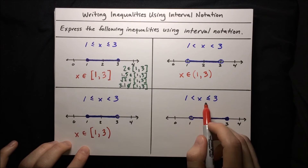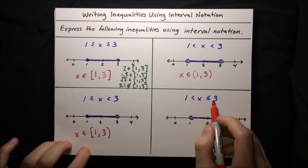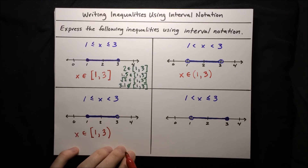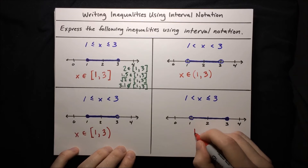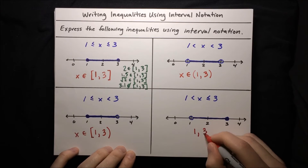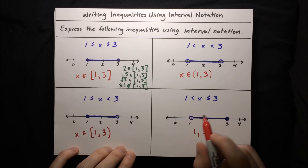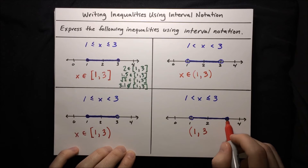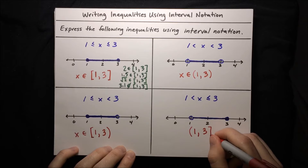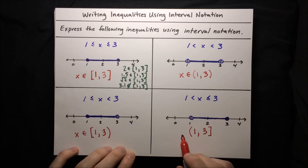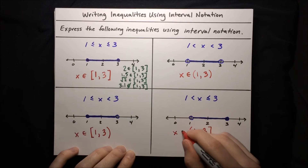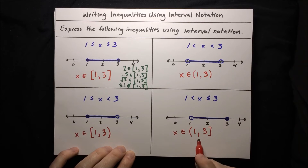The next one is pretty similar, but now 1 is an open circle and 3 is the closed circle — just switched from last time. Endpoints are still 1 and 3. This time 1 is an open circle, so it gets a parenthesis, and 3 is a closed circle, so it gets a bracket. The interval is (1, 3], and to say that x is in this interval, we write x ∈ (1, 3].